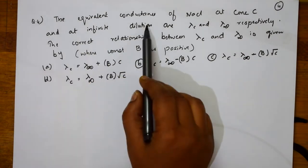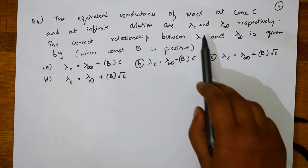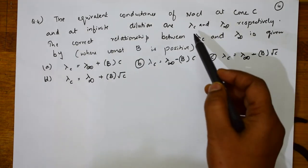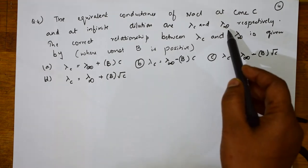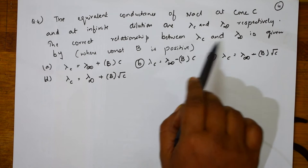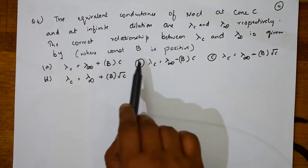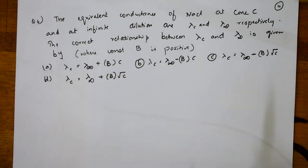The equivalent conductance of NaCl at concentration C and at infinite dilution are lambda C and lambda infinity respectively. The correct relationship between lambda C and lambda infinity is given by what formula they are asking, where constant B is positive.